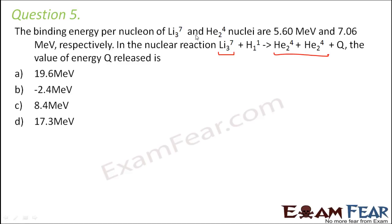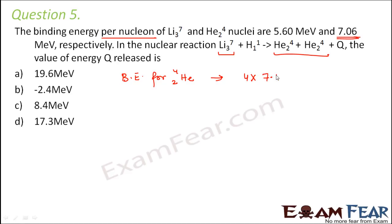The binding energy values which are given are per nucleon. So let us first talk about helium. The binding energy for helium: in helium we have 4 nucleons, so binding energy per nucleon is 7.06. We multiply it by 4 — so 4 into 7.06 mega electron volt. But here in this equation we have 2 helium, so this will further get multiplied by 2.